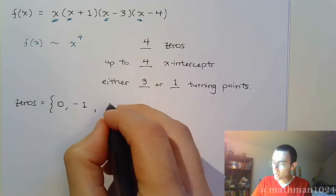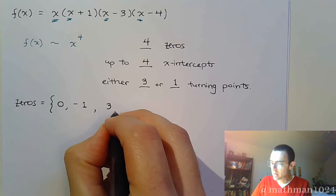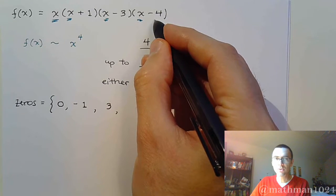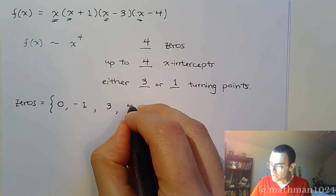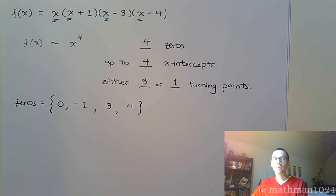From here, from x minus three, you find out that x equals positive three. And then here, x minus four is going to tell you that you have a zero of x equals four.